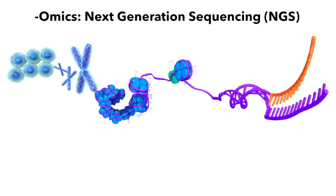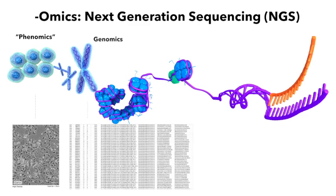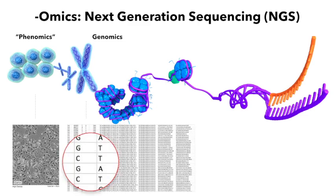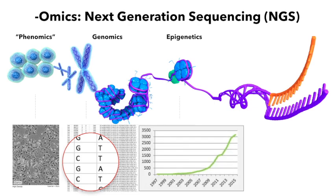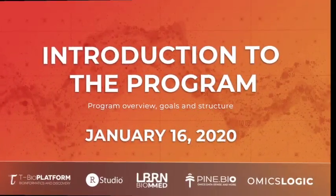The omics technologies are used to explore the roles, relationships, and actions of the various types of molecules that make up the cells of an organism. Many types of omics data can be generated using NGS, or what is also known as high-throughput sequencing. The data can show detailed information about genomic variants, epigenomic regulation, as well as gene and isoform expression.